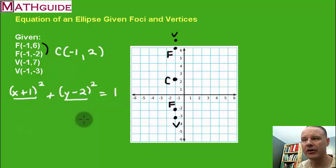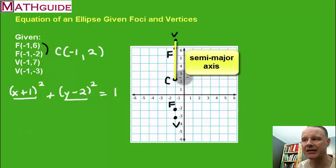So two of our numbers are already in our formula. We need two more numbers, those two denominators to go. Well we're going to get one of the denominators right now. If you look at the distance from the center to the vertex, that distance is one two three four five. That distance is five. That is the semi-major axis.